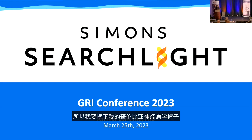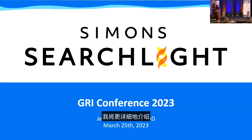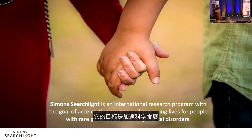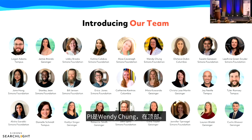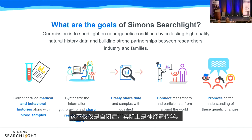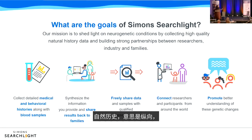Dr. Bain switches to her Simons Searchlight hat. Simons Searchlight is an international research program aiming to accelerate science and improve lives of families affected by rare genetic neurodevelopmental disorders. Led by PI Wendy Chung, the mission is to shed light on neurogenetic disorders — genetics first, not autism only — collecting high-quality longitudinal natural history data and fostering relationships between researchers, industry, and families.